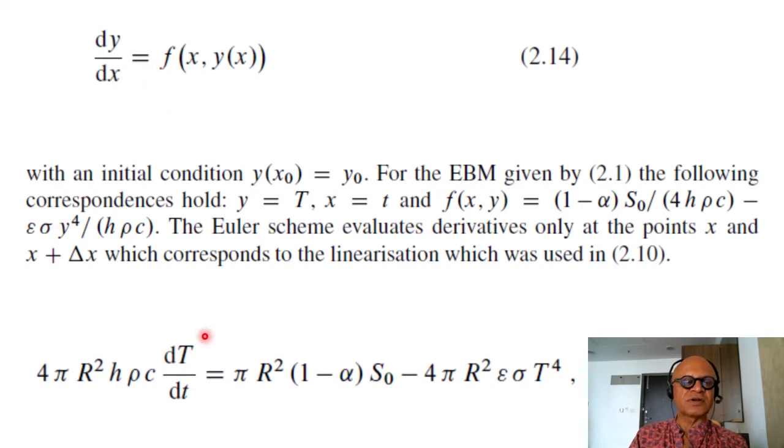So we can say y is our temperature T, x is our time T. So dT/dt is a function of time, a function of temperature. So we have expression T here and t itself as a function of time, right? So T here is a function of time itself. So then f of x of f, the function of x and y in this equation is (1-alpha)*S_0 divided by 4*H*rho*C which we divide through and get that. So that's basically the equivalent of this simplified as a general form.